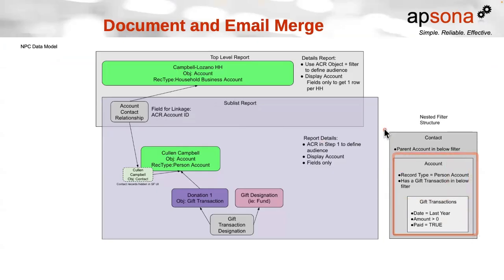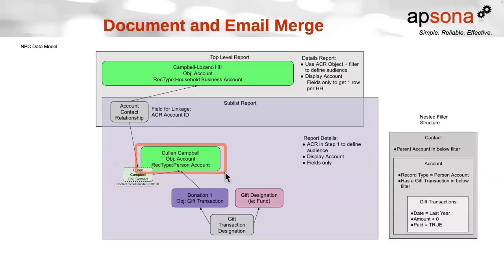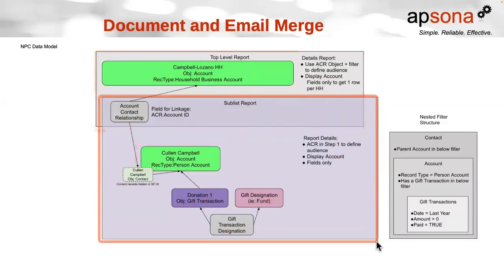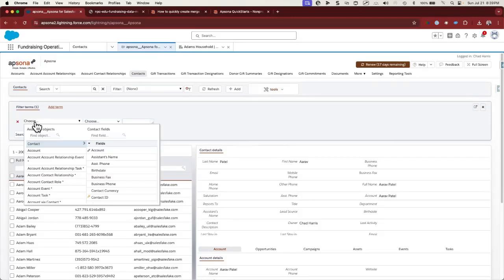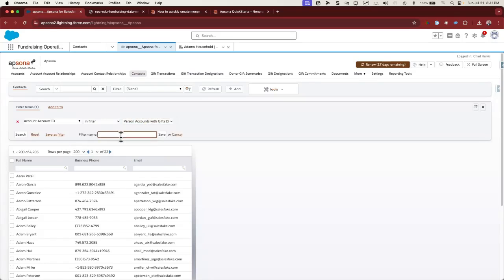Lastly, we're going to create a filter on the Contact object. One technical nuance about the Account Contact Relationship is that it links the household account to the contact record of our donors, and those contact records look up to the person account. This filter will help ensure that all accounts in the top level and all gifts in the sublist level are from the same group. We'll say that the account ID for this contact is in the filter "Person Accounts with Gifts Last Year".